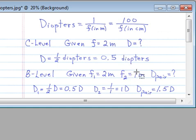When you add these two together, 0.5 and 1, you get 1.5 diopters, 3 halves. And that's the value for the pair.